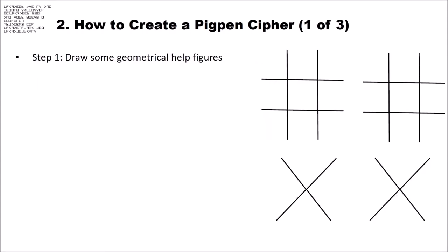So, how do you create a Pigpen cipher? In the first step, you draw some geometrical help figures. You draw this cross here, the second cross, and then this cross here and this cross here.